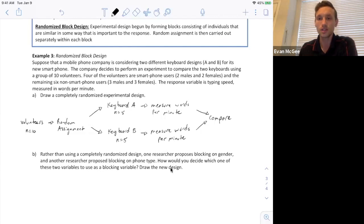So what we want to do is we want to block by the variable that has the strongest association with the response variable. Gender is the other variable that they recommended and whether they're a male or a female, that's not really going to influence how fast they type. What could influence the response, how fast they type, is the phone that they have experience using already. So we want to block by the phone type and not by gender.